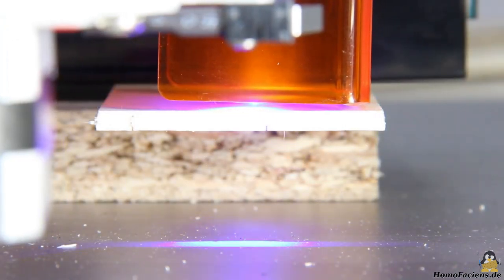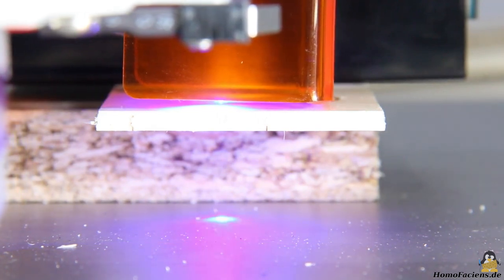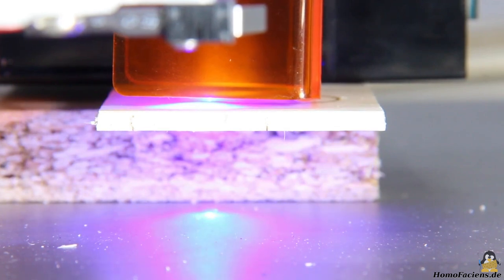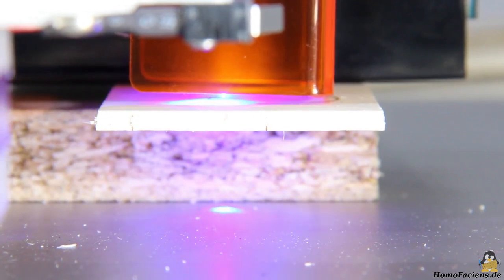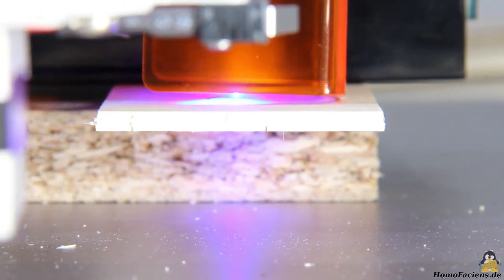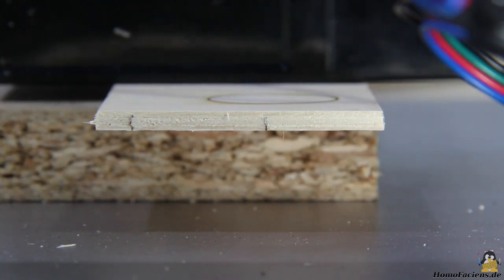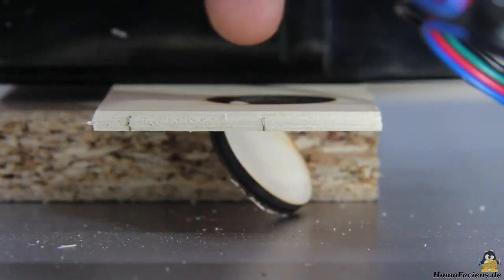Since such thin plywood is no real challenge for the 5.5W laser modules, I will continue with 4mm poplar plywood. The 1.6W laser fails to cut this material. Even after 12 passes with a cutting speed of only 100mm per minute, you still need a little force to break out the disc. This can't be called laser cutting.